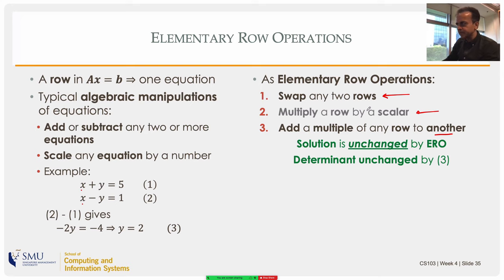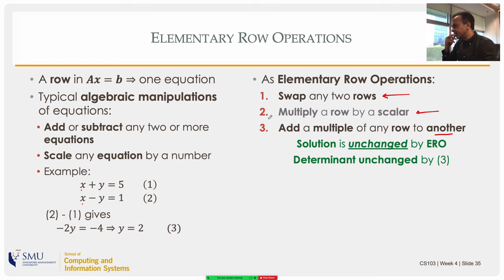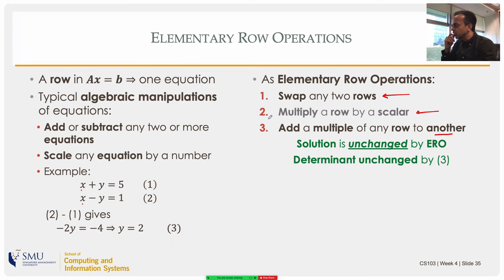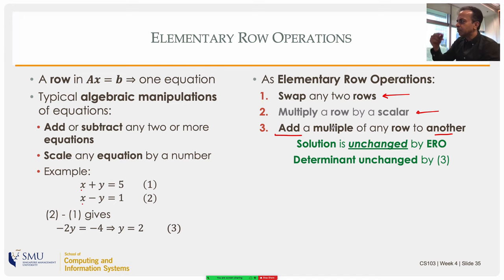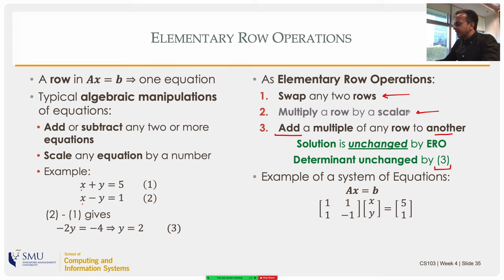In the Gaussian elimination algorithm we will not use the second elementary row operation — scaling — so that is in gray. The important point is that by doing any of these elementary row operations, the solutions and solvability conditions are not changed. Also, if you only do the third operation — adding a multiple of one row to another — the determinant of a square matrix doesn't change.